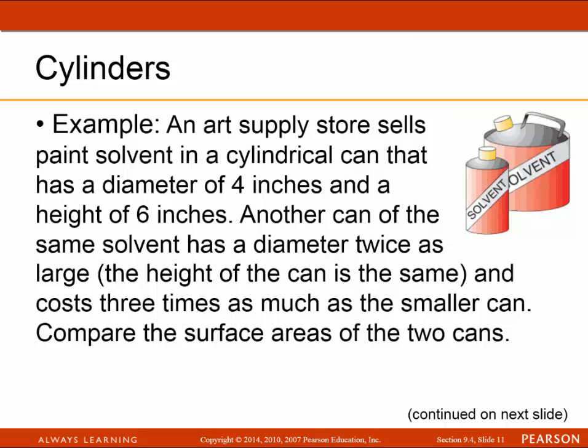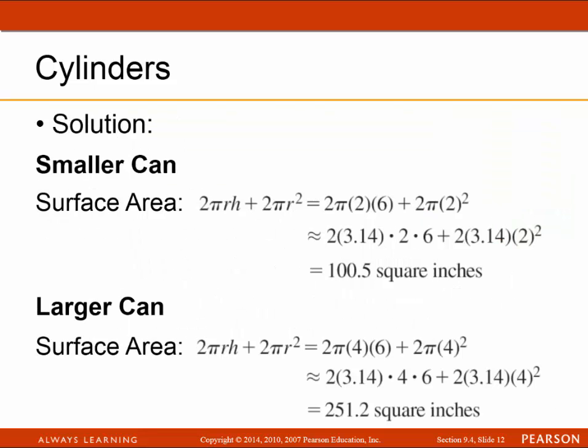Now let's compare the surface areas of the two paint solvent cans: a can with diameter 4 inches and height 6 inches versus a can with diameter twice as large and the same height. The smaller can has a surface area of 100.5 square inches, and the larger can has a surface area of 251.2 square inches.